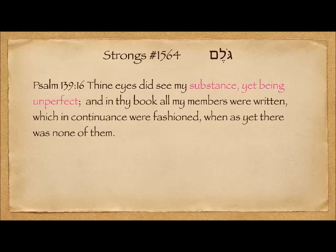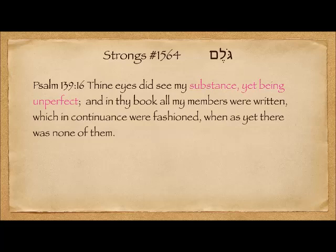It is used once as a noun in Psalm 139:16: 'Thine eyes did see my substance yet being unperfect, and in thy book all my members were written, which in continuance were fashioned, when as yet there was none of them.' So Elijah's mantle as he wraps it up is sort of a formless mass — and this is the concept of the Golem that we read in Psalm 139.